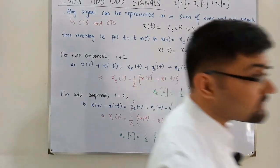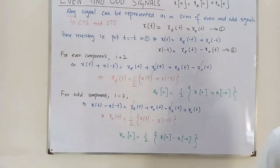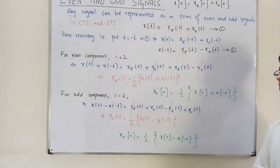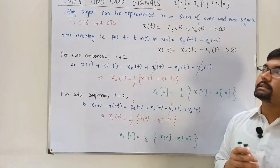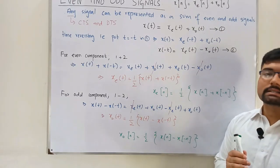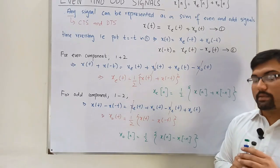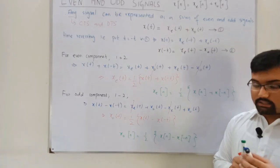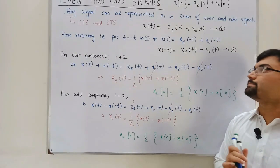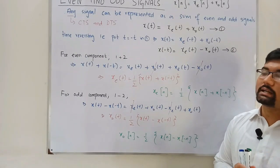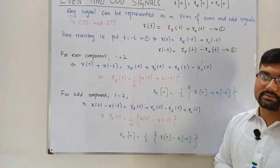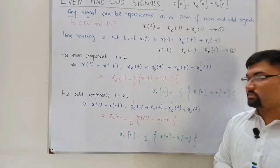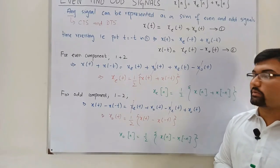That's all about this lecture on even and odd signals. To generalize: an even signal is one that remains the same after time reversal — it is symmetric about the y-axis. For an odd signal, time reversal also reverses the amplitude, meaning it is anti-symmetric about the y-axis.